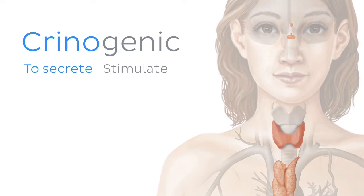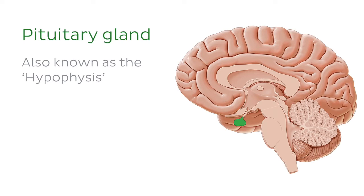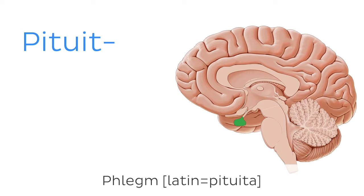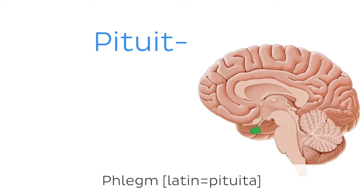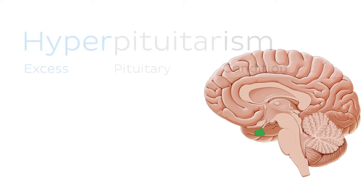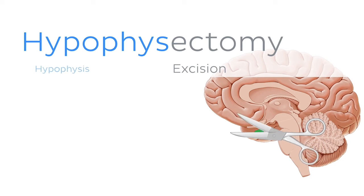Let's take a look now at some terminology related to some of the individual endocrine organs, starting with the pituitary gland. First thing to note is that the pituitary also gets called the hypophysis. Since this gland has two names, it also has two roots associated with it, and good news, they're both really straightforward. The root pituit can be used in terms like hyperpituitarism, which refers to pathologically increased activity of the pituitary gland. The root hypophysis, of course, means hypophysis, and you'll see it in terms like hypophysectomy, which is the removal of the pituitary gland.